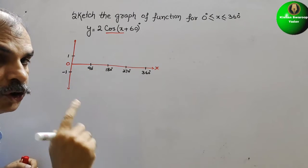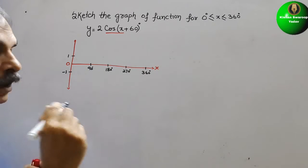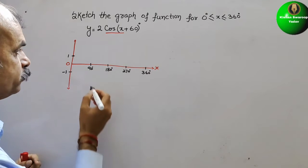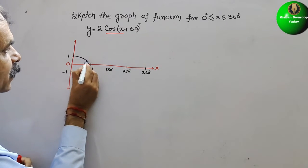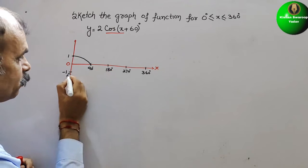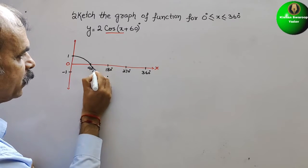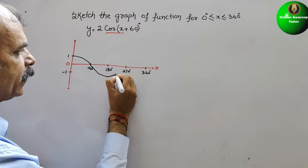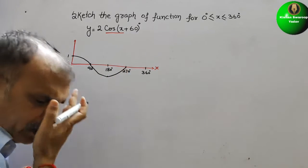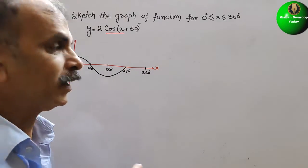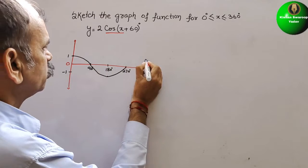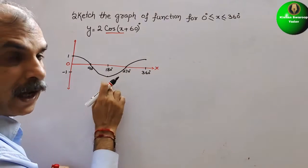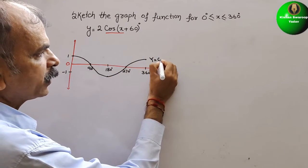cos 0° is 1, so the graph starts here. cos 90° is 0, so it comes down like this. cos 180° is minus 1, so the graph goes down to the bottom. cos 270° is again 0, and cos 360° is again 1 — same as cos 0°. So this graph is y = cos x.